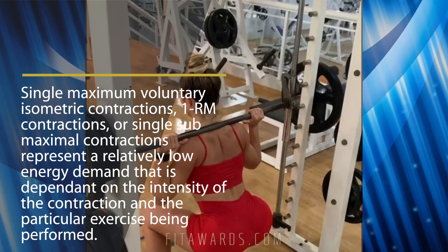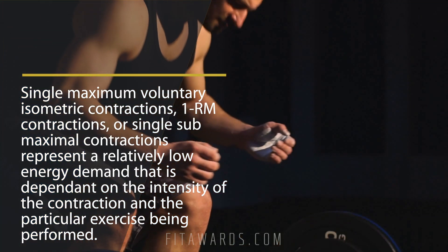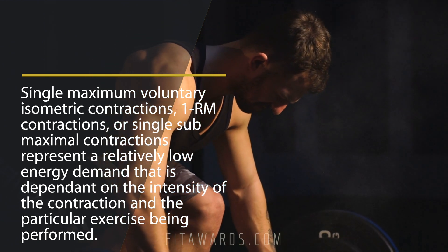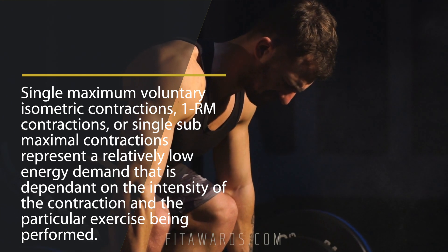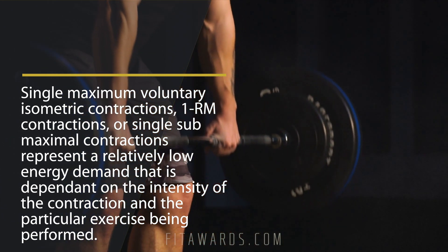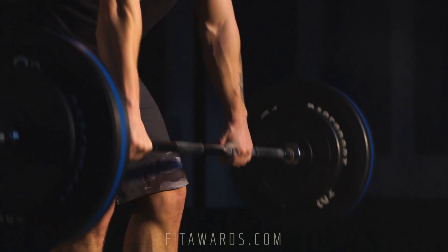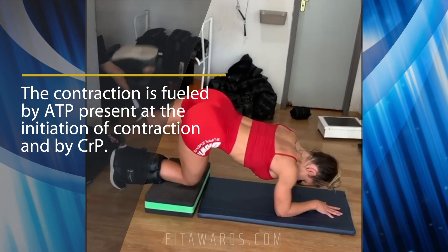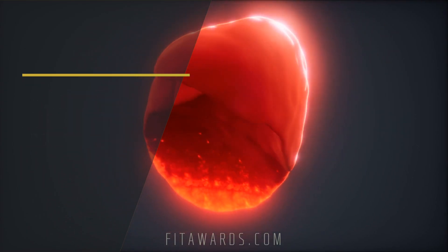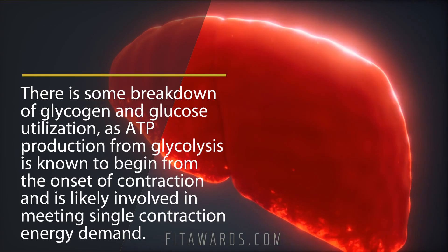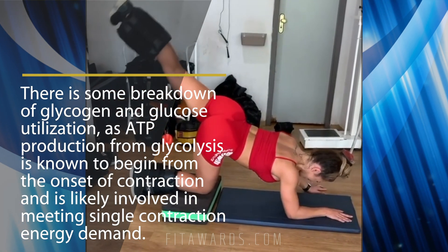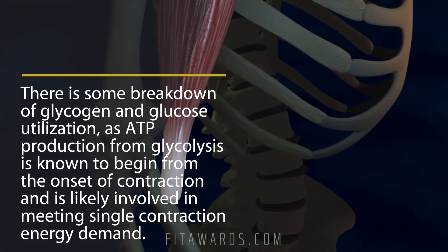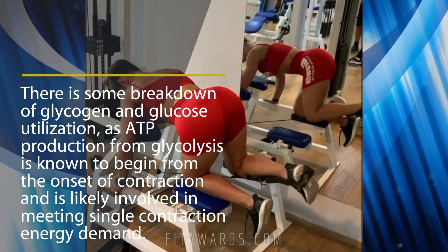Single maximum voluntary contractions — one RM, or one repetition maximum — or single submaximal contractions represent a relatively low energy demand that is dependent on the intensity of the contraction, the particular exercise being performed, and the amount of muscle mass incorporated. The contraction is fueled by ATP present at the initiation of contraction and by CRP. There is some breakdown of glycogen and glucose utilization, as ATP production from glycolysis is known to begin from the onset of contraction and is likely involved in meeting single contraction energy demand.